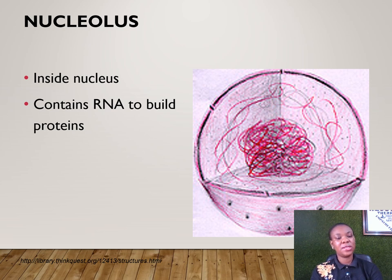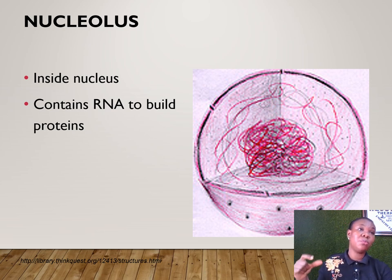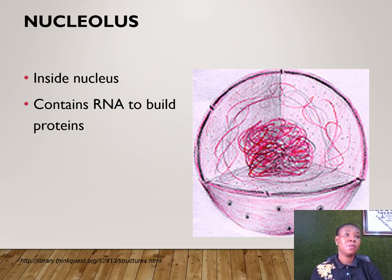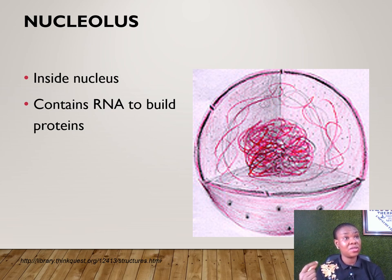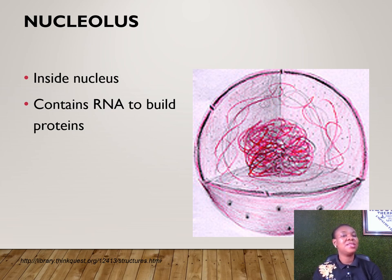The nucleolus is inside the nucleus and contains RNA. RNA is the building block for proteins. Most organs and tissues are made up of proteins. The ribosomes, enzymes, hormones that regulate the menstrual cycle, and signals for nerve conduction all depend on proteins, and their building block comes from RNA inside the nucleus.